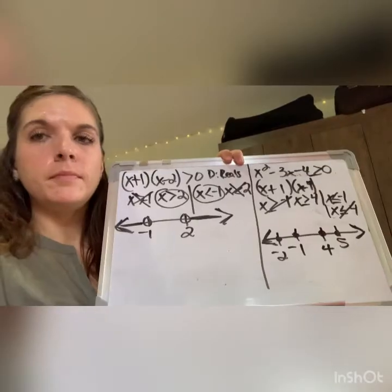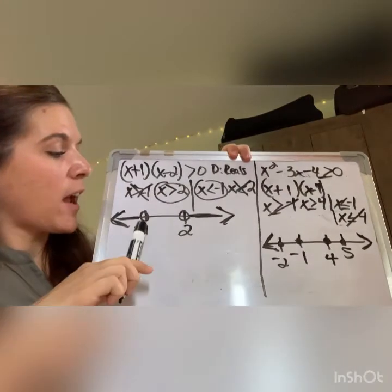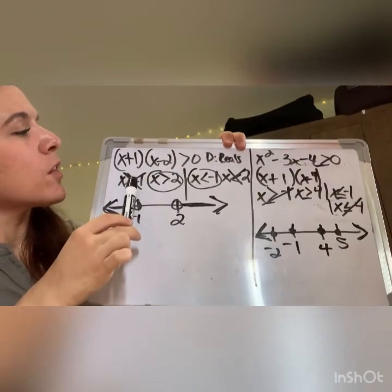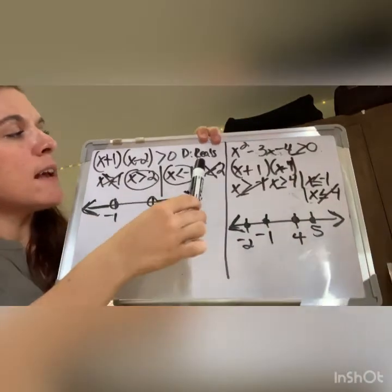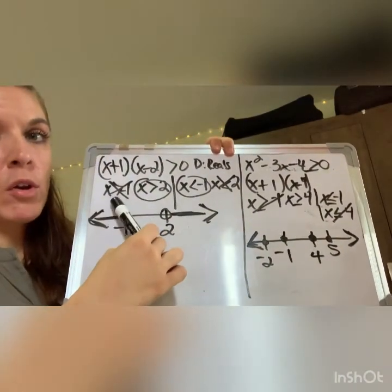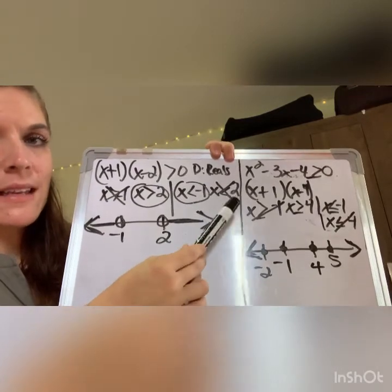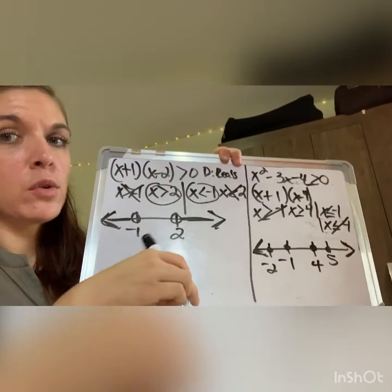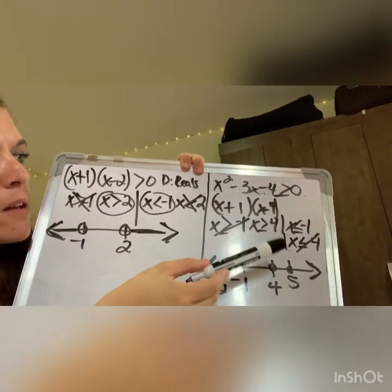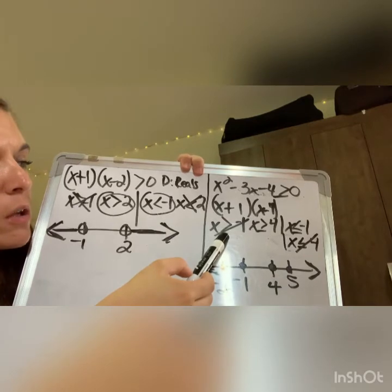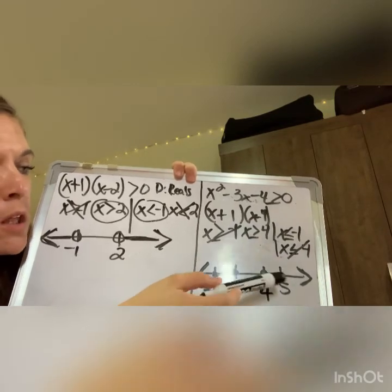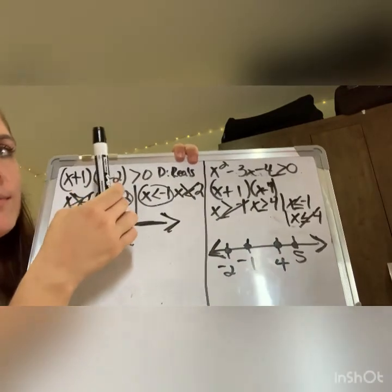For the practice problems: letter A's number line comes from x > 2 and x > -1 as positives, x < -1 and x < 2 as negatives. Keep x > 2 and x < -1 — real numbers, so shade continuously without including -1 and 2. Letter B required factoring first: (x + 1)(x - 4) ≥ 0. That gives x ≥ -1 and x ≥ 4, with negatives x ≤ -1 and x ≤ 4. Since integers are included, your graph includes -1 and 4 as closed circles.